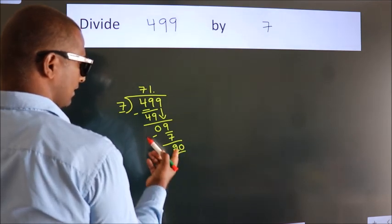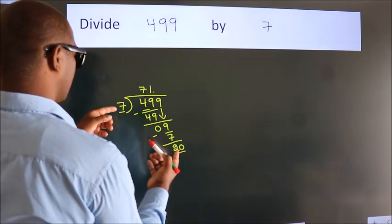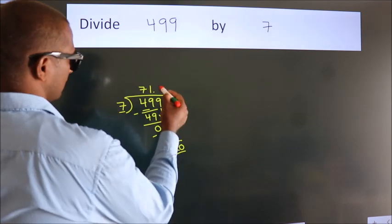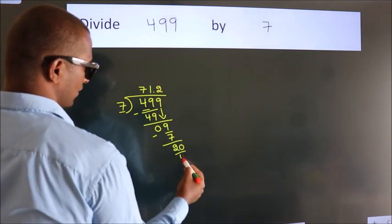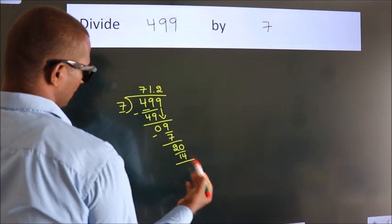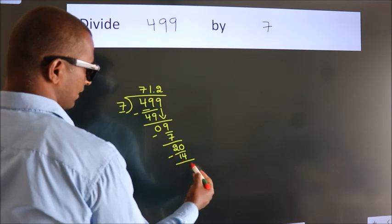So 20. A number close to 20 in 7 table is 7 2s 14. Now we subtract. We get 6.